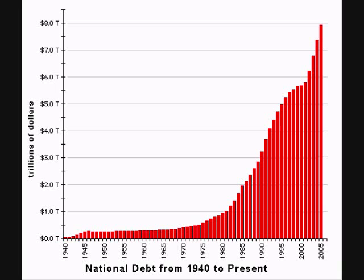The national debt hit the $1 trillion mark in 1981. It took over 200 years for the U.S. to rack up a debt of $1 trillion. By 1986, five years later, it was up to $2 trillion. Over 200 years to rack up the first trillion, only five years to rack up the second trillion. Three years later, we racked up another trillion, bringing it to $3 trillion. Two years later, another trillion, bringing it to $4 trillion.